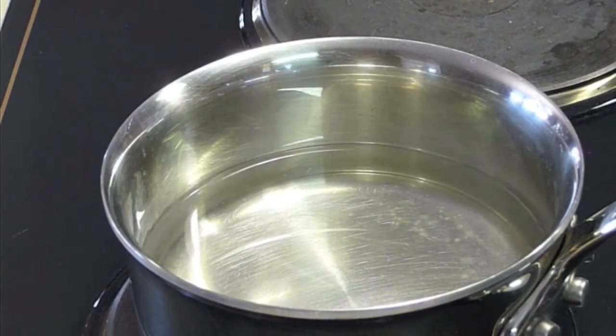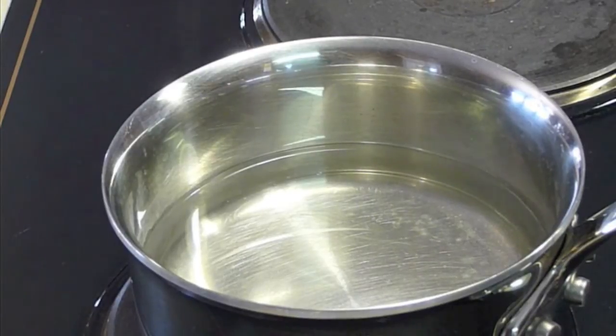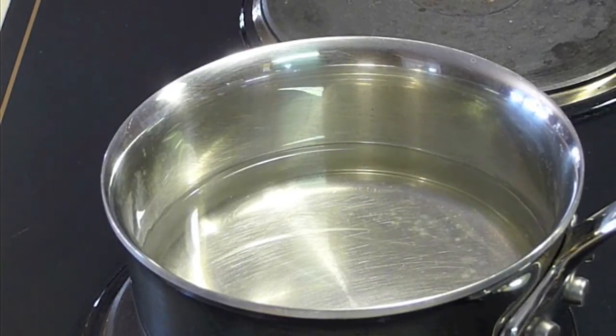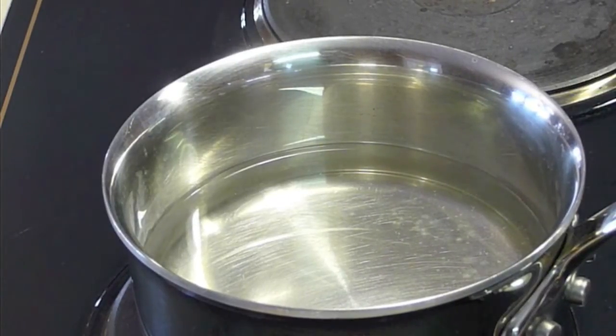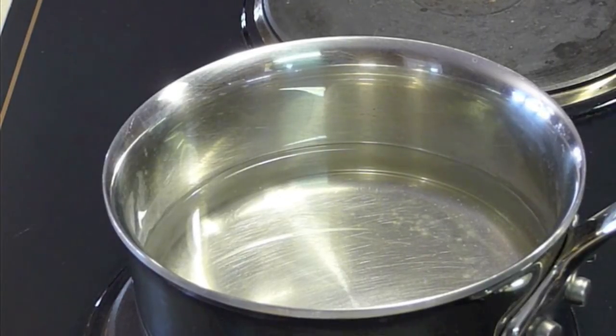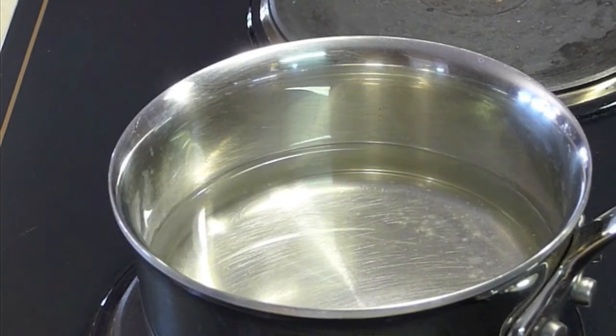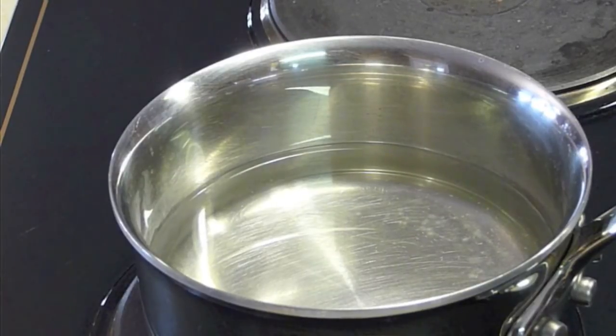When I boil the water, what happens is that the vapor rises, but the calcium and magnesium is too heavy. It cannot rise with the vapor. So what happens is it separates from the water, and then it just starts floating on top of the water. It's like little white specks or almost like a film.